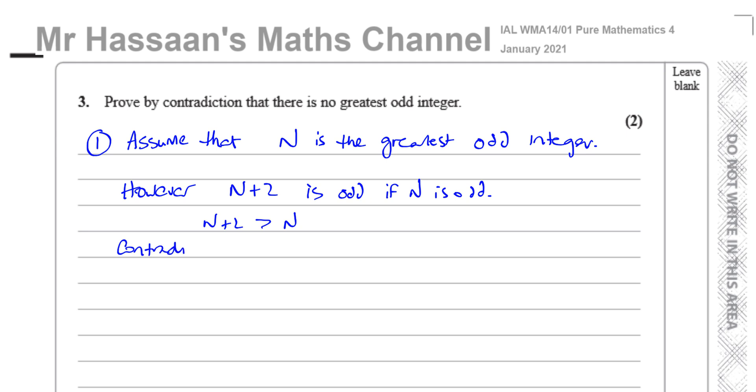And that is a contradiction. It contradicts our original statement. Therefore, there is no greatest odd integer. And that's it. That's the two marks. Simple as that.